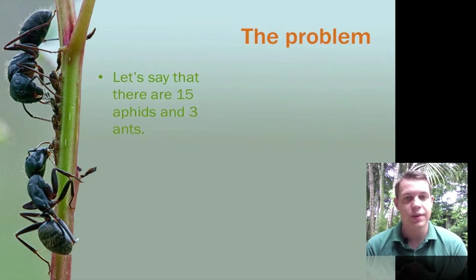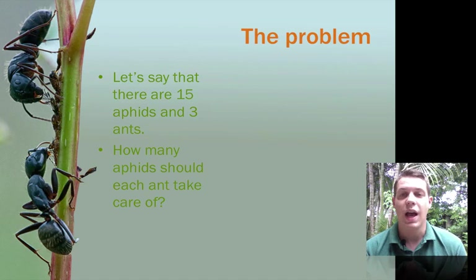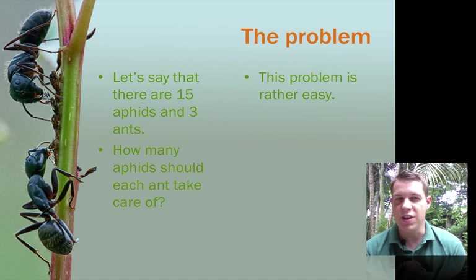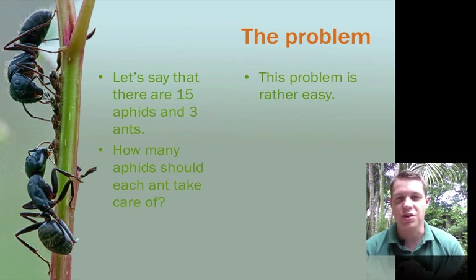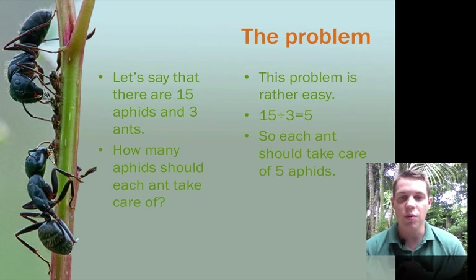So let's say we have this problem. There are 15 aphids and 3 ants. How many aphids should each ant take care of? This problem is rather easy. You maybe have already figured out the answer in your head. But 15 divided by 3 is of course 5. So each ant should take care of 5 aphids.